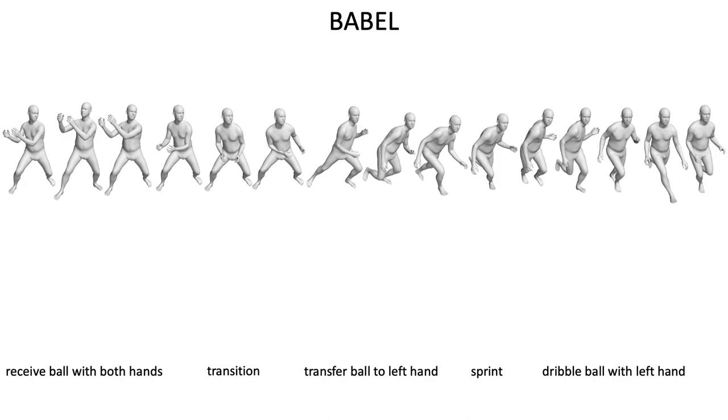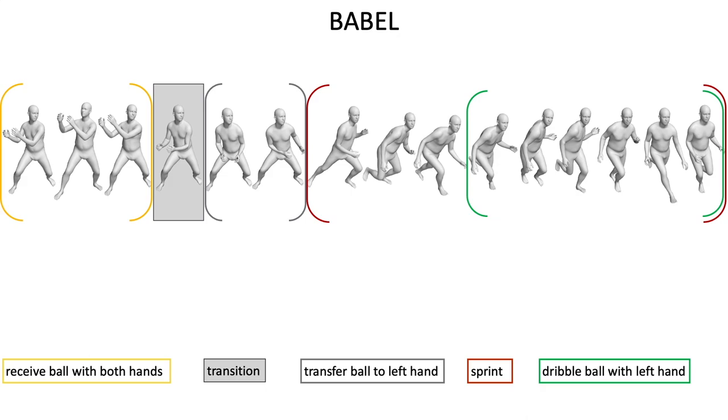We address these shortcomings with Babel, a large scale dataset with dense action annotations for ground truth 3D human movement that are derived from the AMASS dataset.